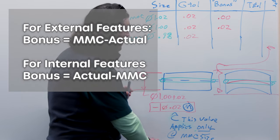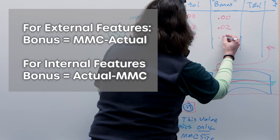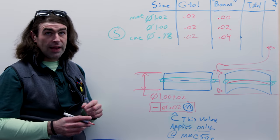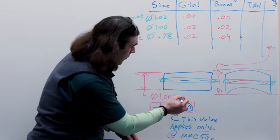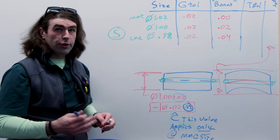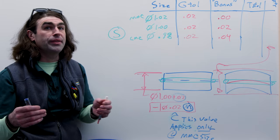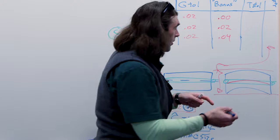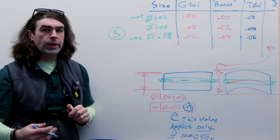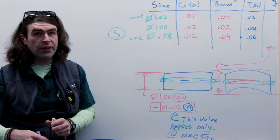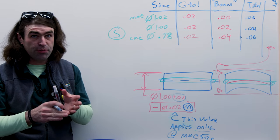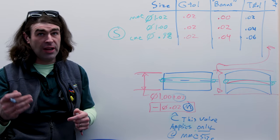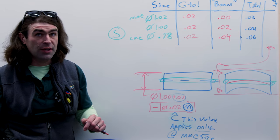Now we just keep going down. We have a total bonus tolerance capability of 40 thousandths. That is equal to our total size tolerance - they're related. Now this gives us a total tolerance of 0.06. If the feature comes in at its LMC, its smallest diameter, the tolerance changes depending on the actual size of the feature.